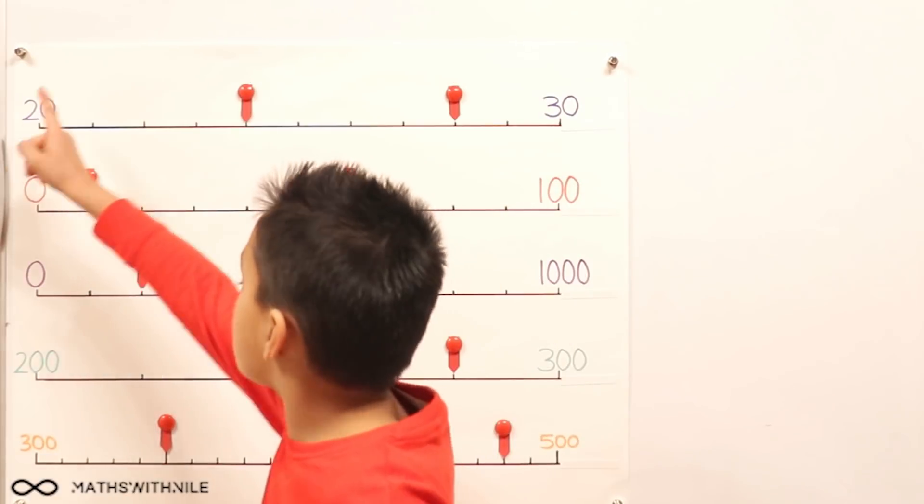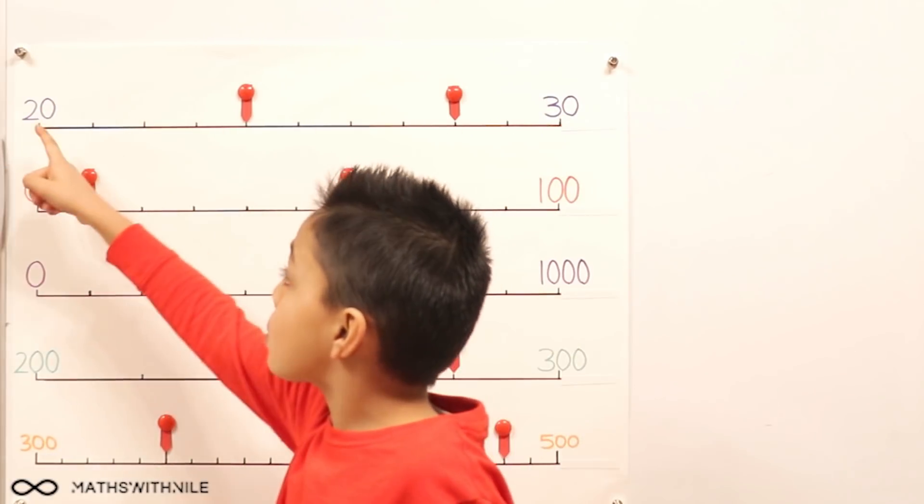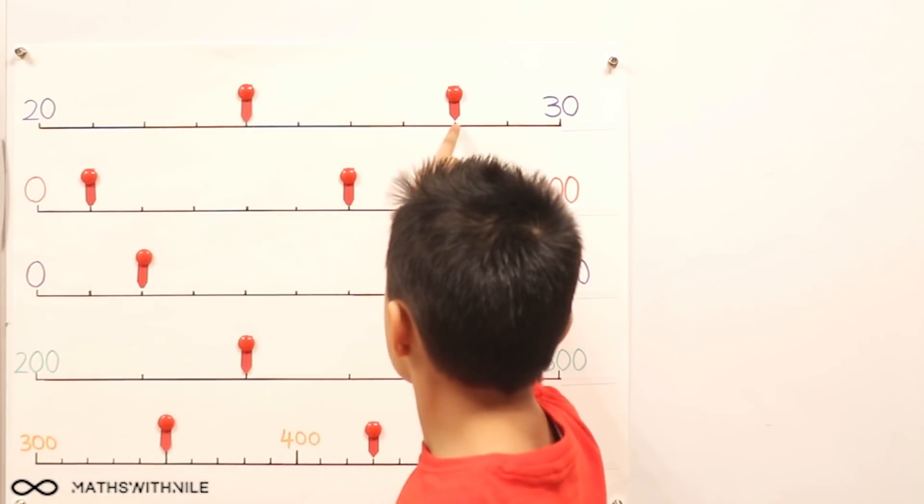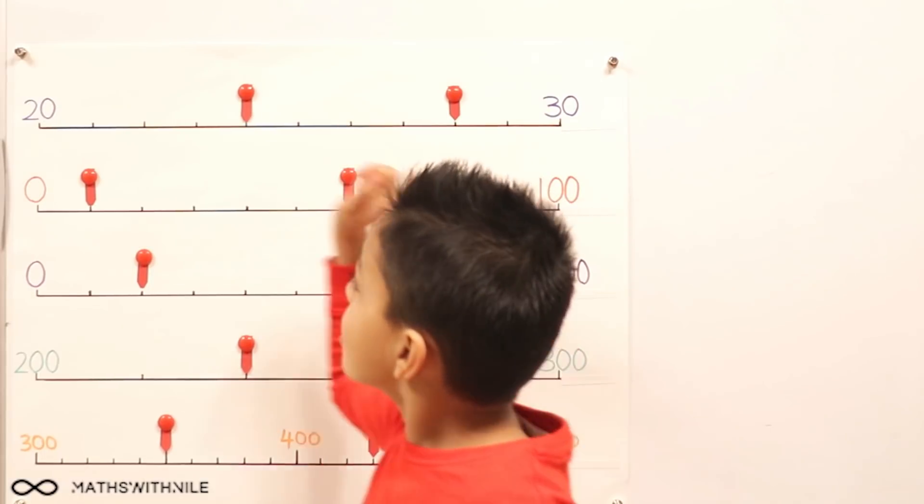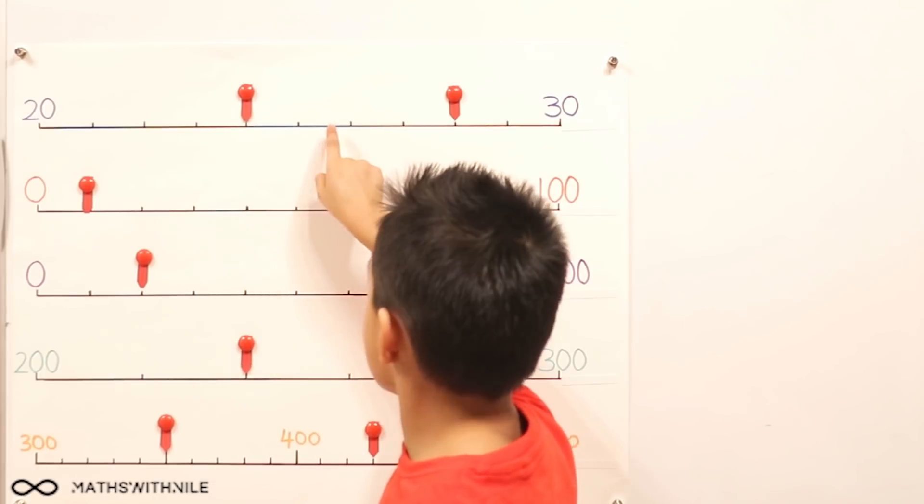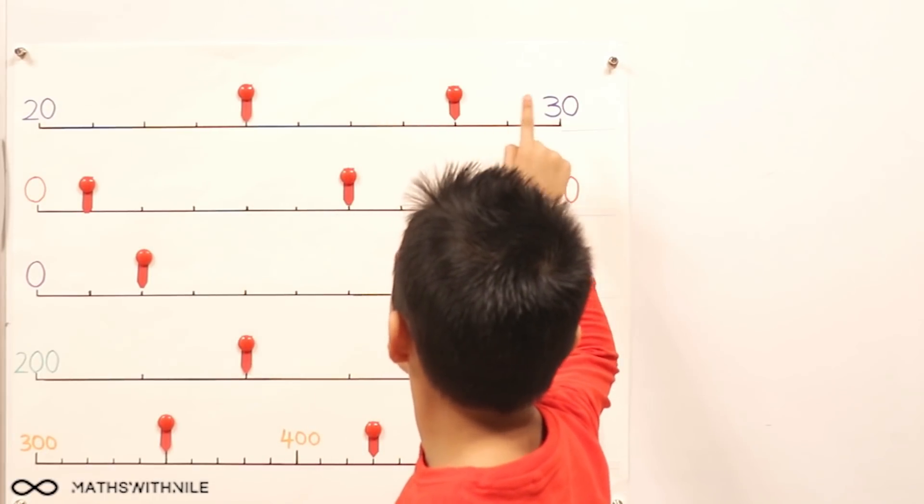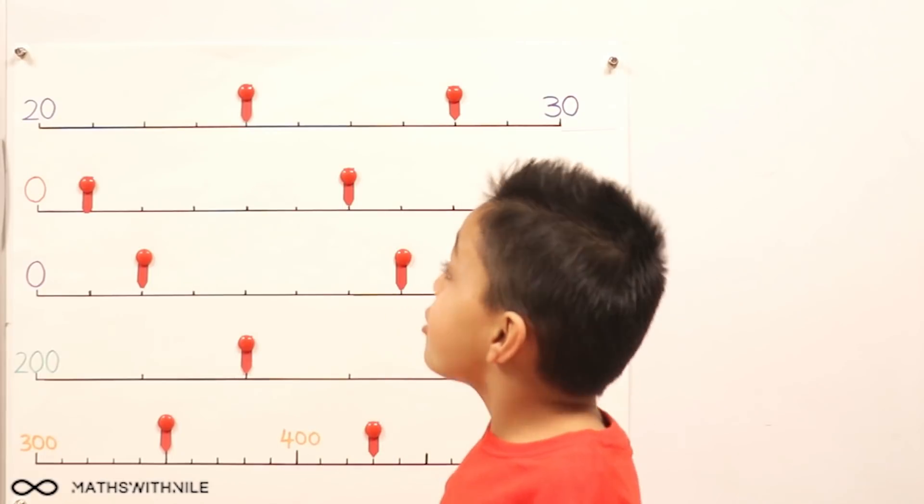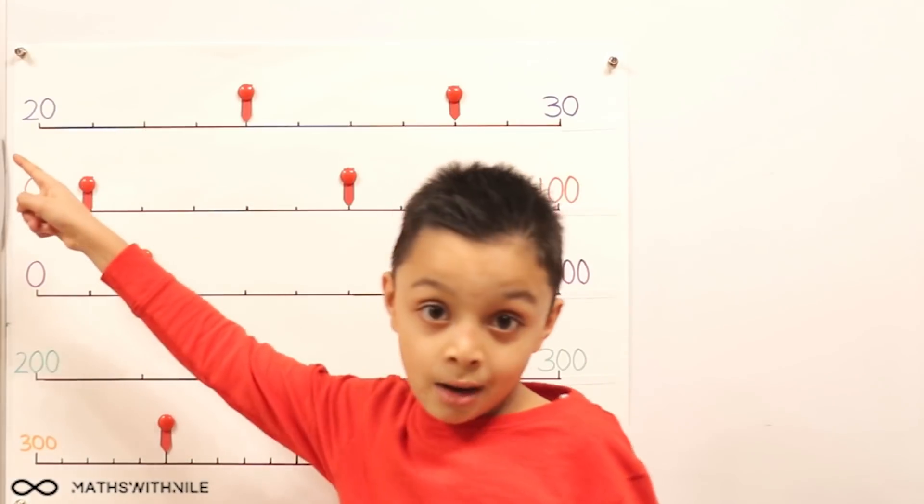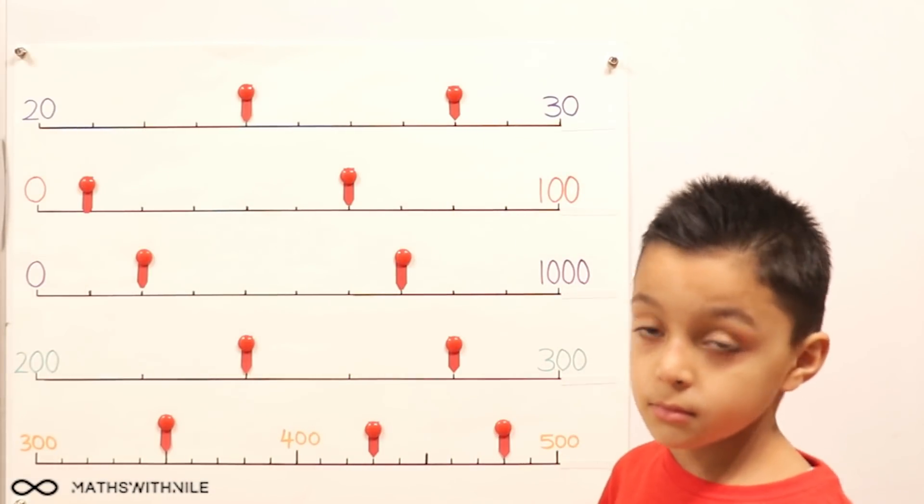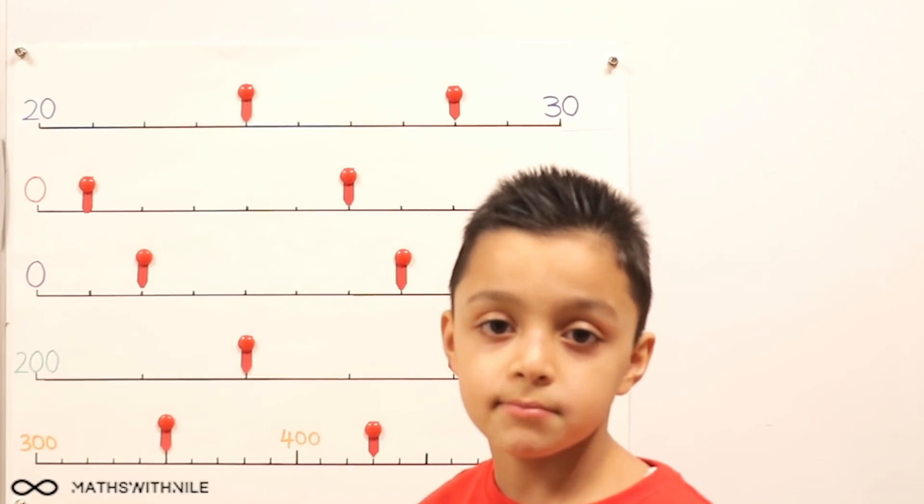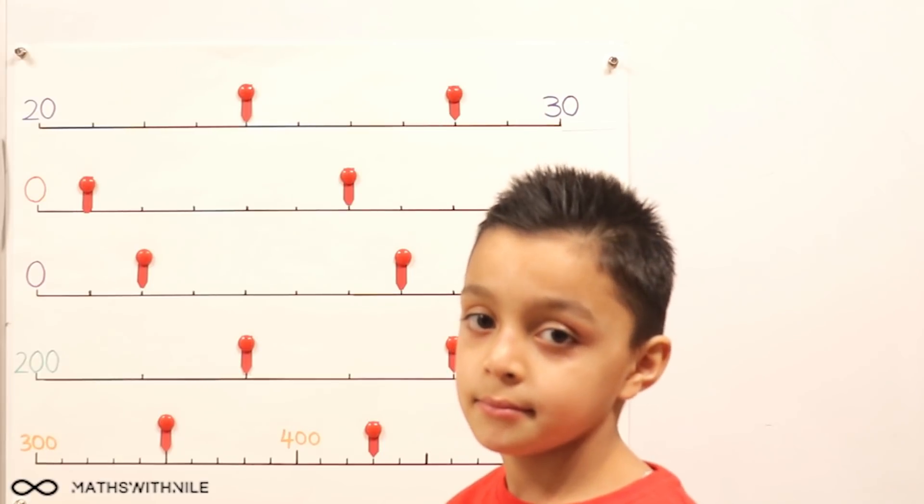This is 20 to 30. So we want to count how many of these bits there are first. How many spaces we have. One, two, three, four, five, six, seven, eight, nine, ten. Okay, so in the middle of 20 and 30 is 10. So that means it's going up in ones. Very good. So there's a difference of 10 from 20 to 30 and we've got 10 spaces. So we're counting up in ones.